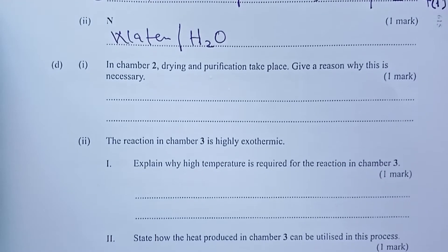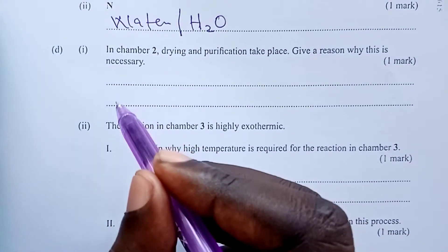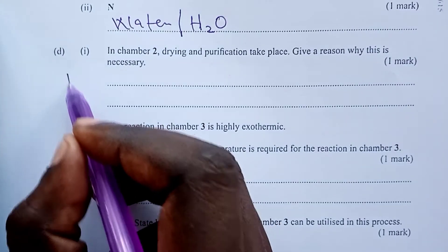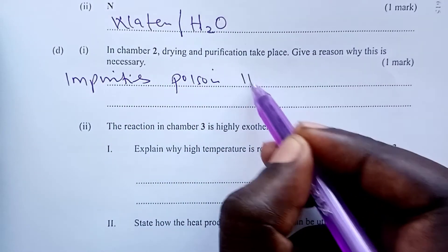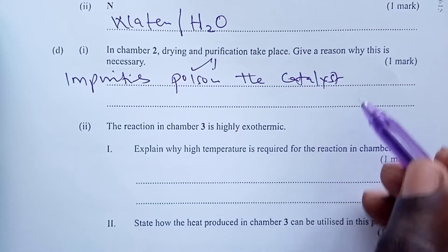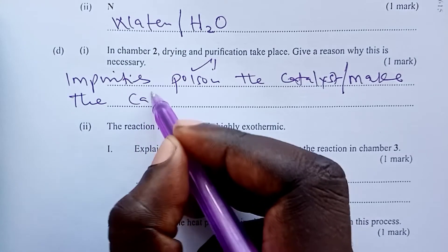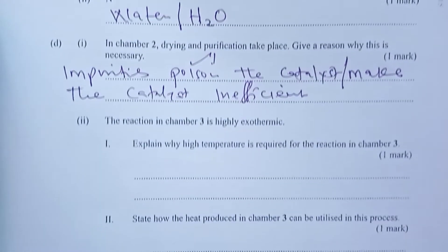In chamber 2, drying and purification takes place. Give a reason why this is necessary. The answer is that impurities poison the catalyst — the key word for one mark is 'poison.' An alternative is to tell the examiner that impurities make the catalyst inefficient, which would also earn the same one mark.